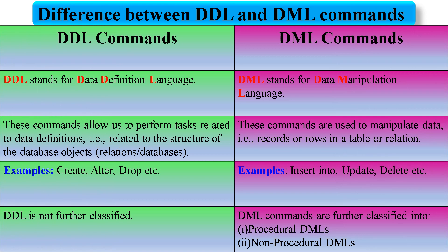Difference between DDL and DML commands: DDL stands for Data Definition Language; DML stands for Data Manipulation Language. DDL commands allow us to perform tasks related to data definitions — that is, related to the structure of database objects, relations, or databases. DML commands are used to manipulate data, that is, records or rows in a table or relation. Examples of DDL commands are CREATE, ALTER, DROP, etc. Examples of DML commands are INSERT INTO, UPDATE, DELETE, etc. DDL is not further classified, whereas DML commands are further classified into procedural DMLs and non-procedural DMLs.